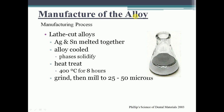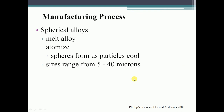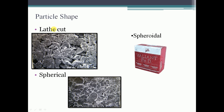Manufacturing process: For lathe cut alloy, silver and tin are melted together, allowed to cool and solidify, heat-treated at 400°C for 8 hours, then ground and milled to 25–50 microns. For spherical alloy, the alloys are melted together, atomized, and form spherical particles ranging from 5 to 40 microns in size.